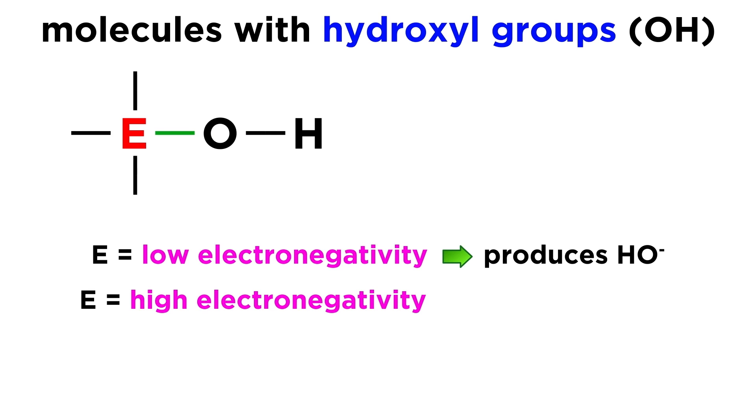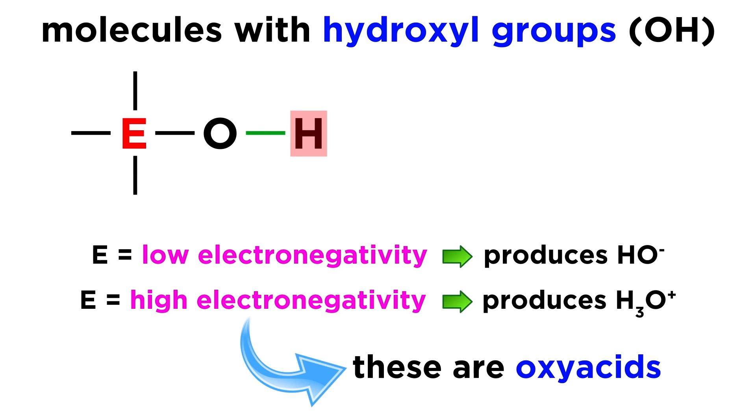If it has a high electronegativity, it will hold on to the electrons in that bond very tightly, meaning this other bond is more likely to break, generating hydronium, meaning the compound was an acid. In the latter case, with electronegative central atoms, we are necessarily describing oxyacids.